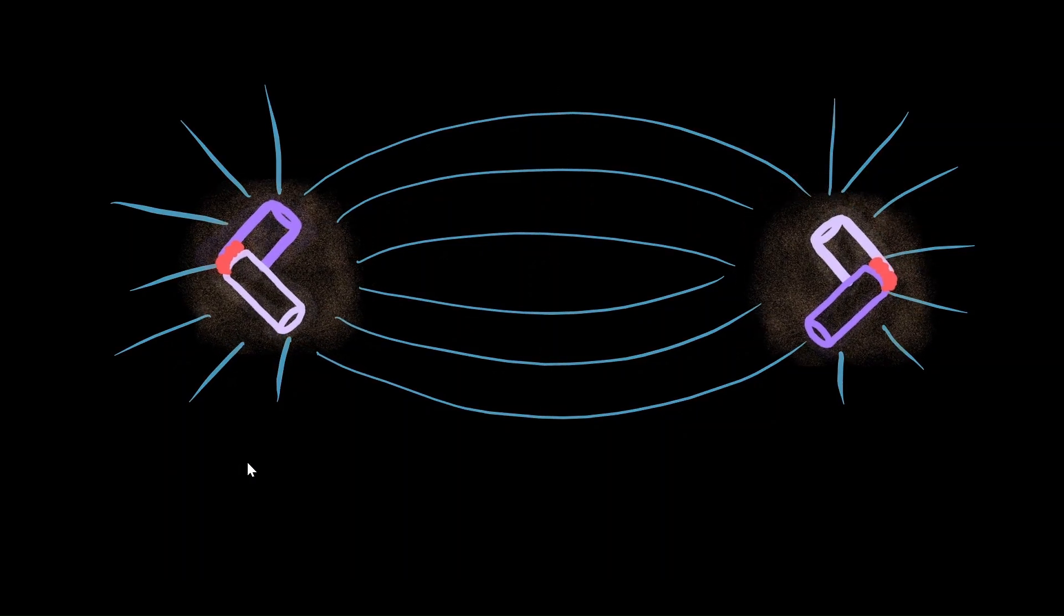At the end of cell division, each centriole moves into one daughter cell. During the next round of cell division, the process starts from the beginning.